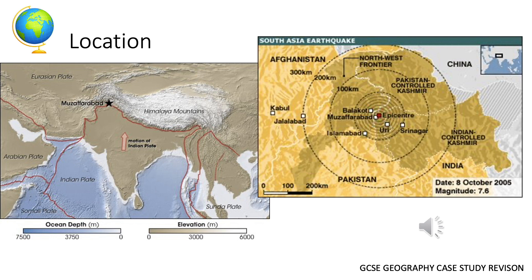The map on the left shows that the earthquake occurred as a result of the Indian plate and the Eurasian plate coming together at a collision plate boundary. If you look at the map on the right you can see where the epicentre of this earthquake was — it was located in Pakistan, north east of the capital city Islamabad.